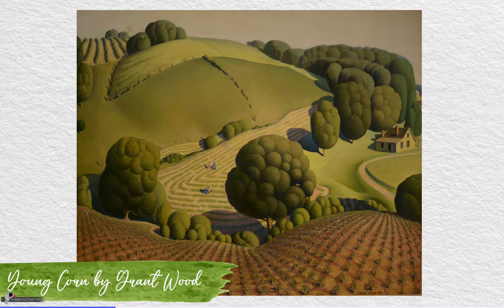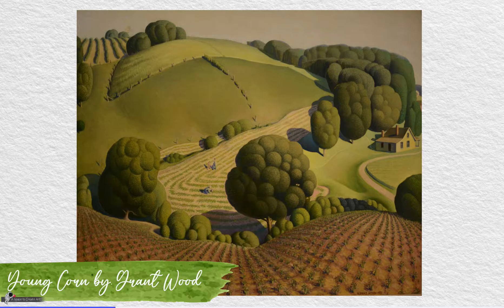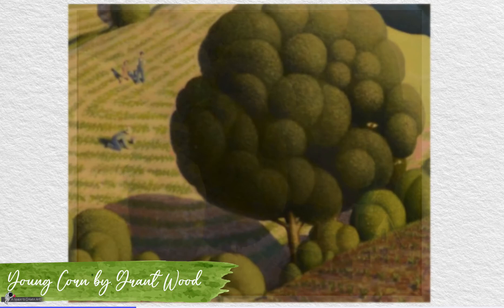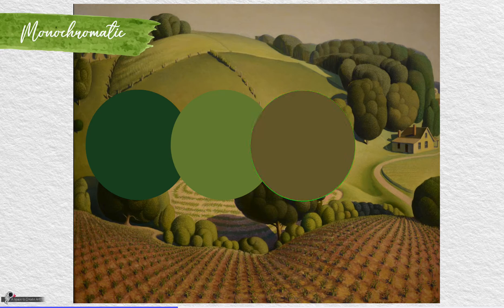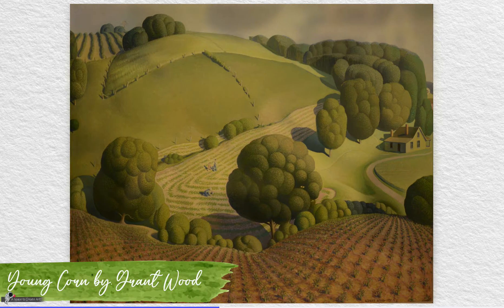In Grant Wood's landscape, 'Young Corn,' you can see that the color scheme is mostly monochromatic. Tints and shades of green, some with a more yellow or brown tone, give this painting a sense of melancholy and seriousness. Monochromatic color schemes also give a great sense of unity to the painting.